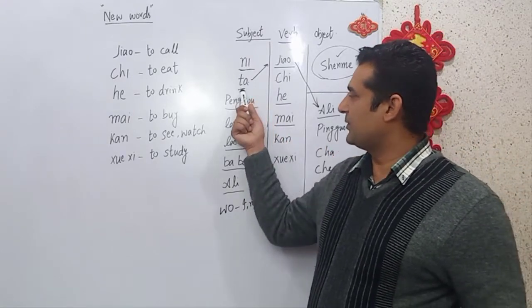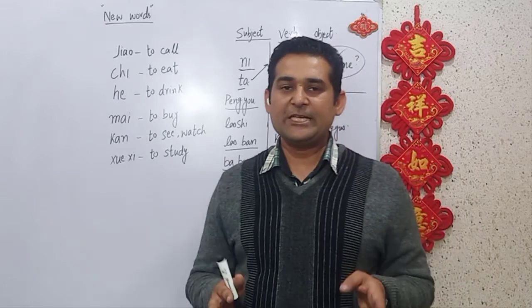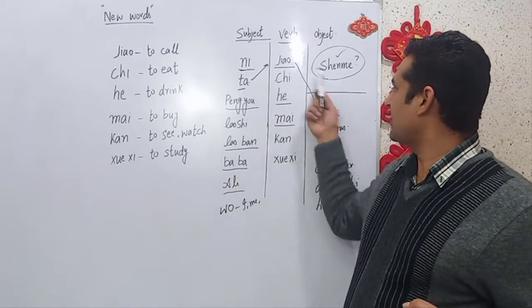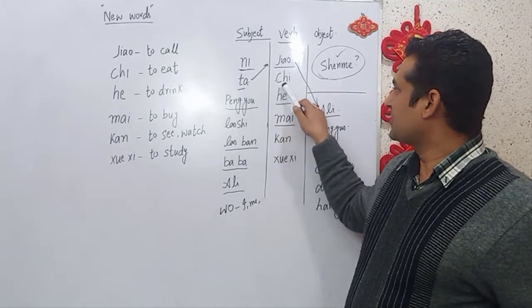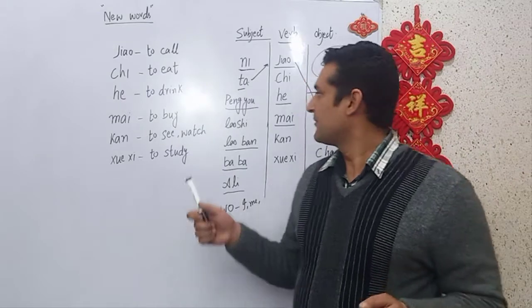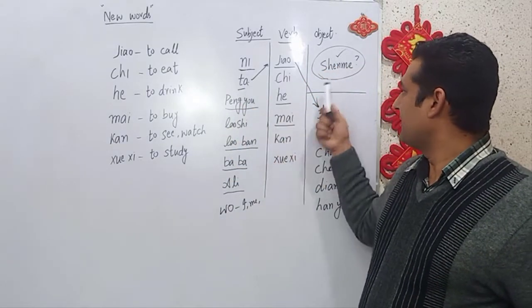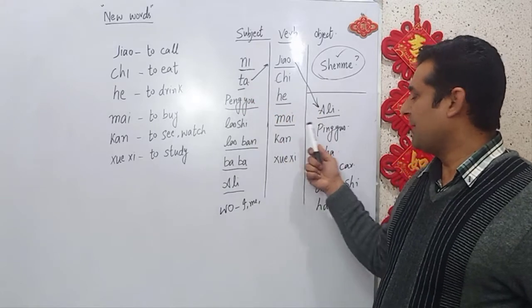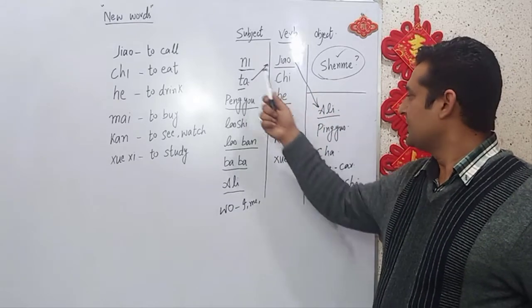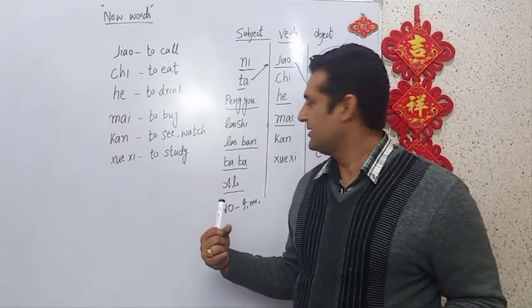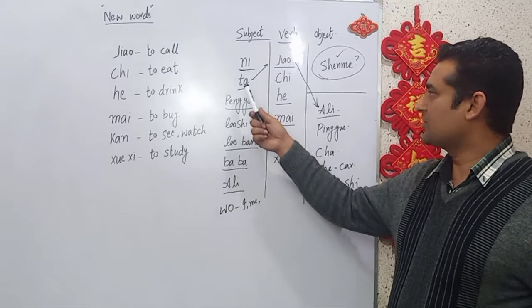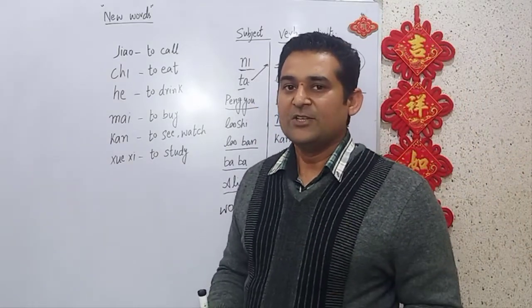Now using 'ta' for he/she: ta jiao shí ma — 'he call what?' Reply: ta jiao Ali — 'he call Ali.' Ta chih shí ma — 'he eat what?' Ta chih pinguo — 'he eat apple.' Ta mai shí ma — 'he buy what?' Ta mai pinguo — 'he buy apple.' Ta khan dianshi — 'he watch TV.' Ta shui xi hanyu — 'he study Chinese.'